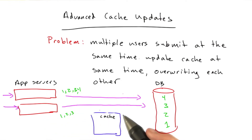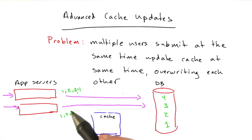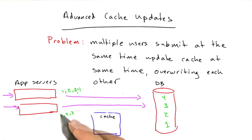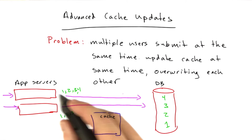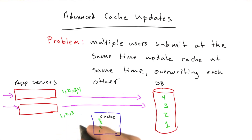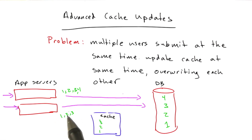There's no guarantee that this first app server will write to the cache before the other, because things can happen out of order. Your app server can have a slight delay or a network glitch. There are any number of reasons why one app server might have a little hiccup, and the other writes 1, 2, 3, 4 to the cache first, and then this other one comes and tramples on top of it.